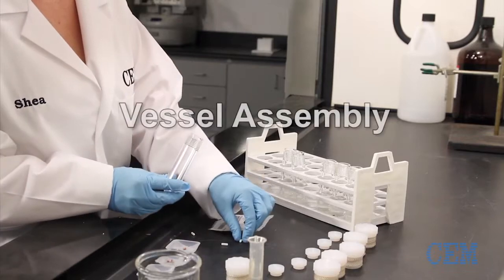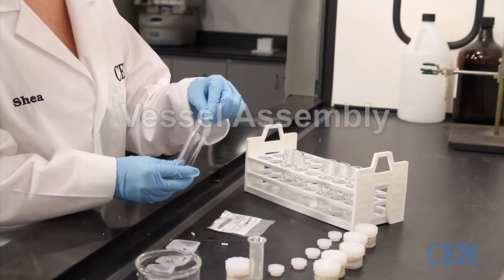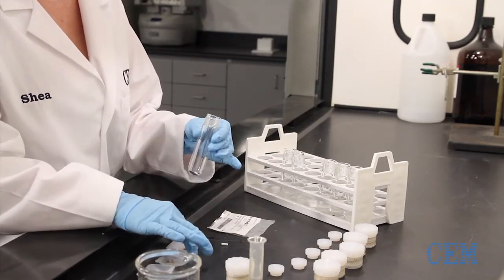To assemble the Glasschem vessel, first place a stir bar in the vessel and then add reagents and solvent.